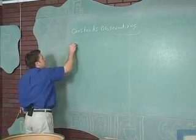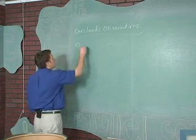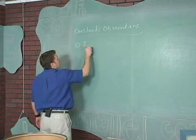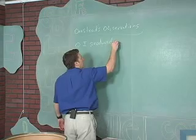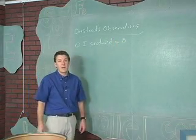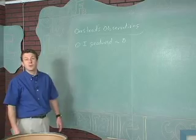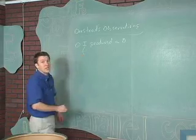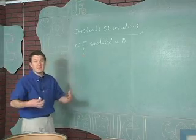First of all, he observed that a current produced a magnetic field. That was absolutely huge. Recall how he did that. Recall how he made that observation.